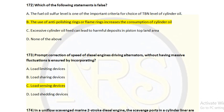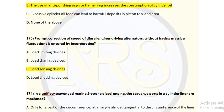Question number 173. Proper correction of speed of a diesel engine driving alternators without having massive fluctuation is ensured by incorporating: option A, load-limiting device; option B, load-sharing device; option C, load-sensing device; option D, load-shedding device. The correct answer is option C — a load-sensing device is used to correct the speed of the diesel engine with respect to the driving alternator's load. For question number 173, option C is the correct answer.